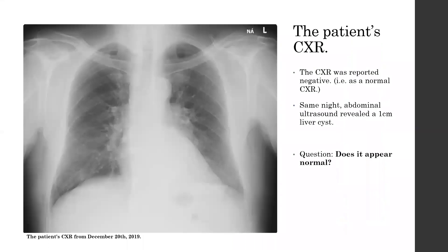This was the patient's chest x-ray from the day he visited the ER, and it was reported as normal — negative, meaning normal — by the reading radiologist. The same-night abdominal ultrasound also revealed a one-centimeter liver cyst. But one thing to question is whether this chest x-ray is really normal.